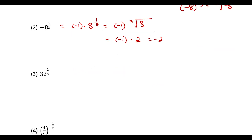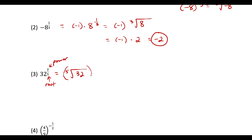Moving on — remember the phrase 'power over root' to help you convert. For 32 to the 2/5, we have the fifth root of 32 raised to the second power. The fifth root of 32 is 2, and 2 to the second power is 4.